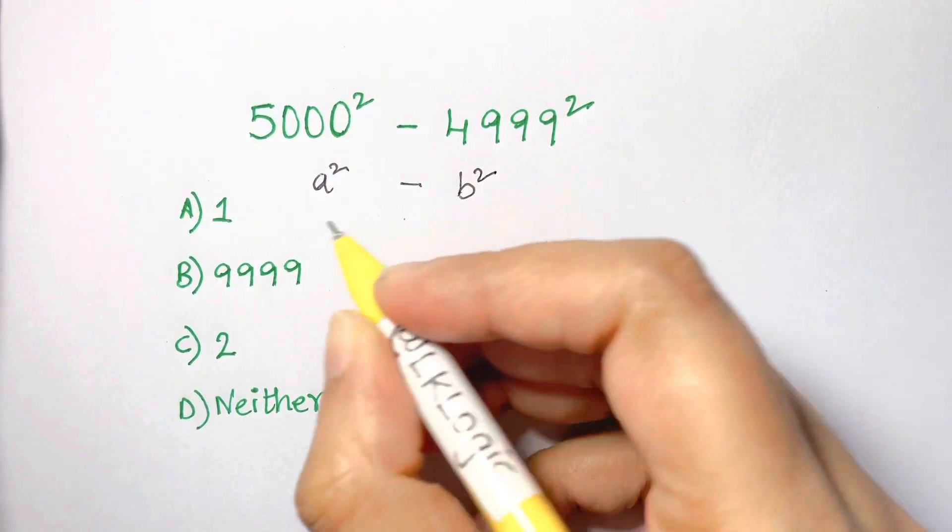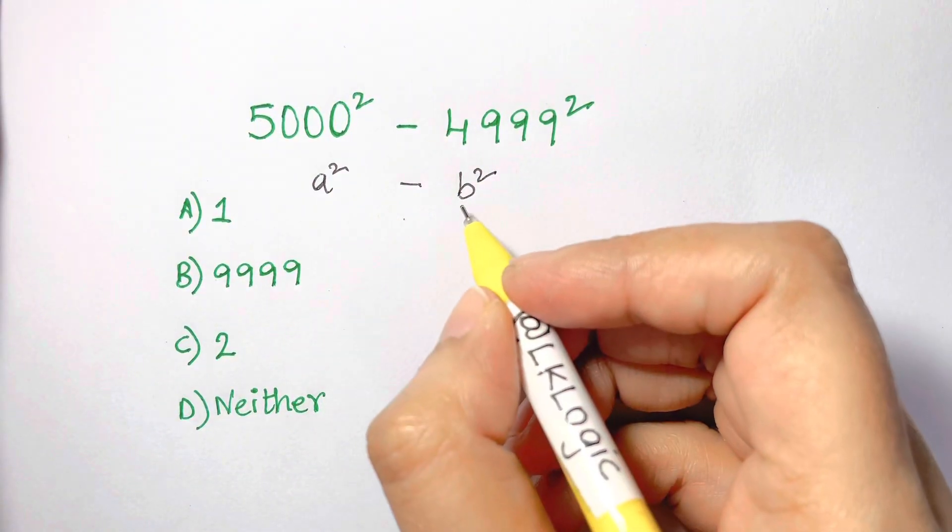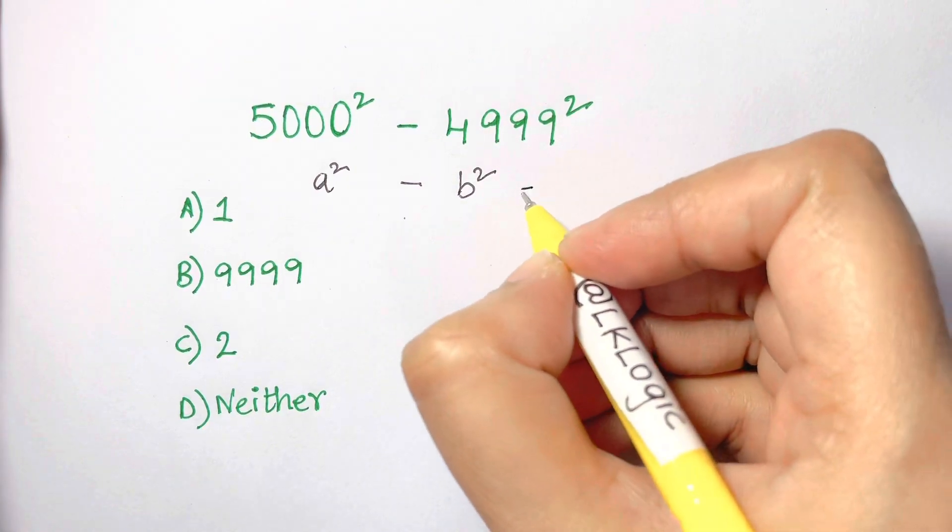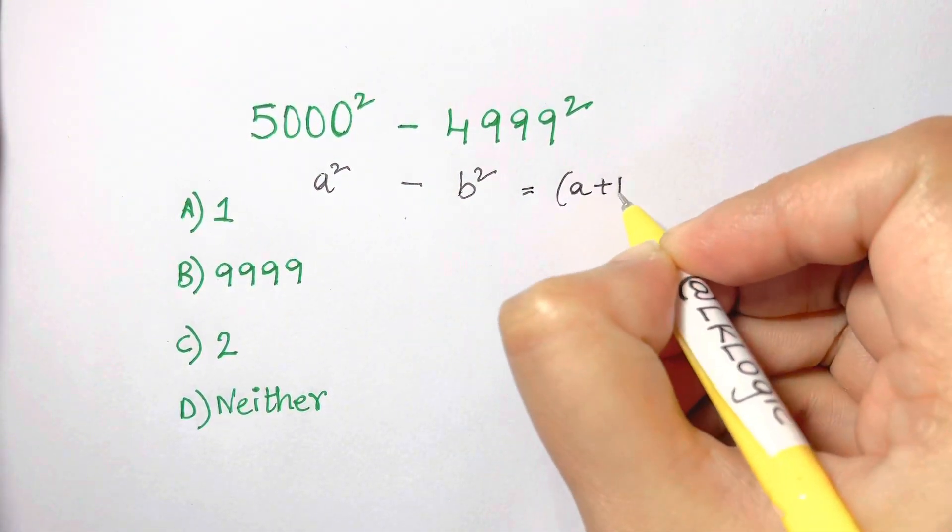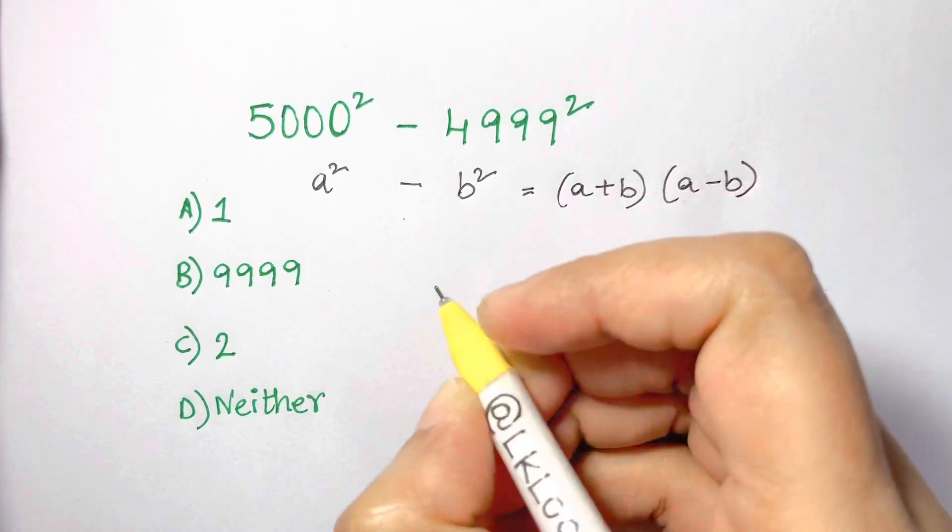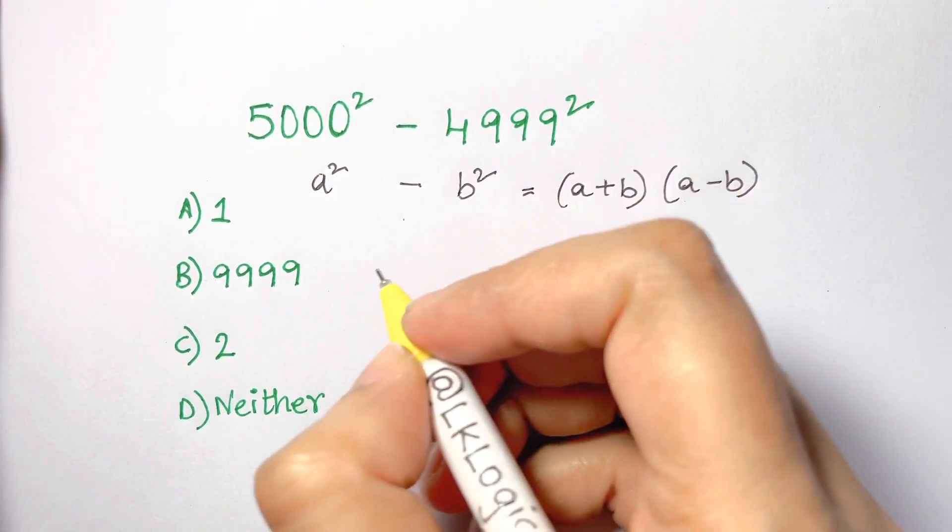Oh, you got the clue, right? It's an identity: a squared minus b squared, and that's equal to a plus b times a minus b. How simple is that! Now you will tell me the answer quickly.